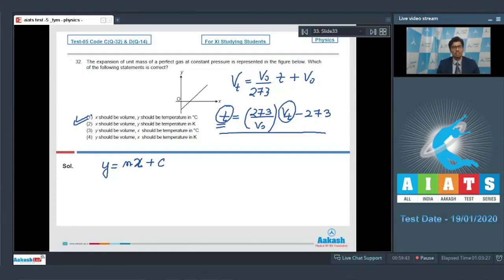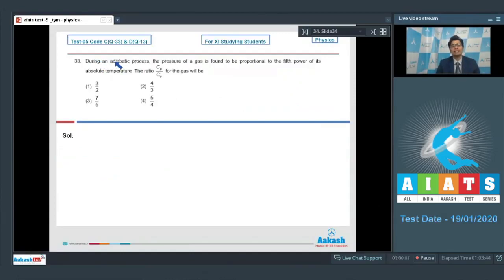Now, let us proceed to question number 33. Question 33 says, during an adiabatic process, the pressure of a gas is found to be proportional to fifth power of its absolute temperature. The ratio Cp by Cv for the gas will be.